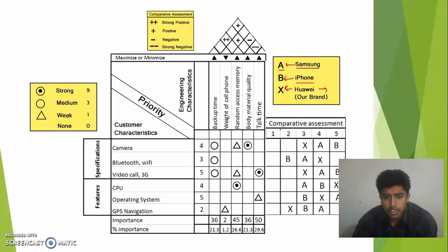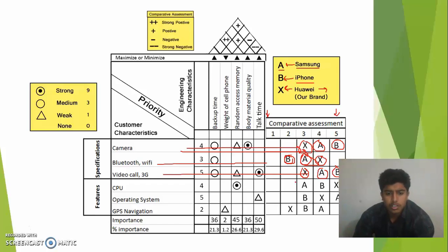So I have assigned the value of one to five. This is basically a scale: one means poor and five means excellent. So with respect to camera, Samsung is at four, iPhone is at five, and we are standing at three. With respect to bluetooth and wi-fi, we are at four, Samsung is at three, and iPhone is at two. Video calling 3G: iPhone is at five, Samsung is at four, and we are at three. I have done all this in the similar way.